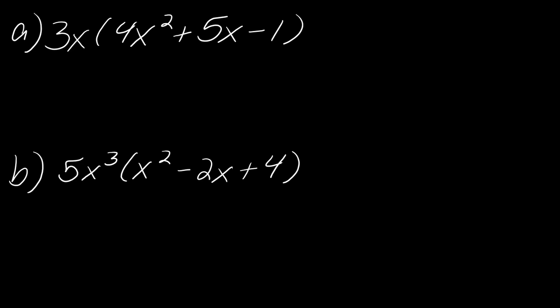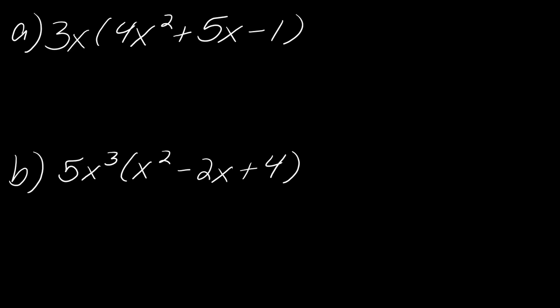Now we're going to talk about multiplication. Multiplication with polynomials can mean a couple of different things. The nice easy case is when you have a single-term polynomial, which we call a monomial — mono for one. This can just be distributed into a set of parentheses, and from there you're really just dealing with exponent rules. Remember, there is an invisible exponent of 1 on x.